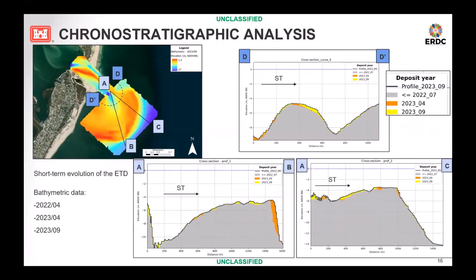This is the same analysis for Barnegat Inlet, but in this case we are using bathymetry from 2022 to 2023. For 2023 we have two datasets, so it's showing a short-term evolution of the ebb-tidal delta. From D to D-prime on the arc transect, we can see the movement of sediment going from north to south, following the longshore sediment current. For A to B, we can see deposition of sediment on the edge of the ebb-tidal delta.